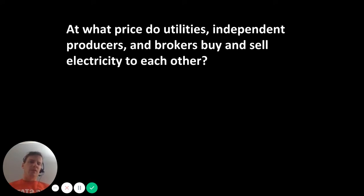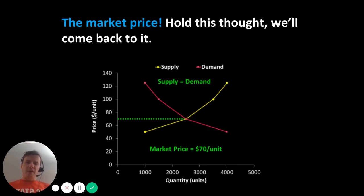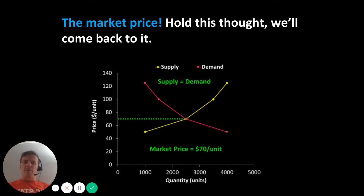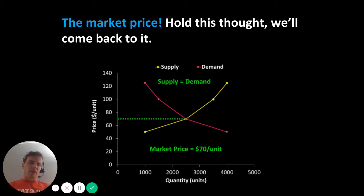At what price do utilities, independent producers, and brokers buy and sell electricity to each other? The market price. Remember, in monopoly systems we weren't thinking about microeconomics. During the monopoly consensus, prices were controlled — set at cost of service and regulated by public utility commissions. Finally, we get to this point in history where markets for electricity are actually starting to look a bit more like classical microeconomic markets.